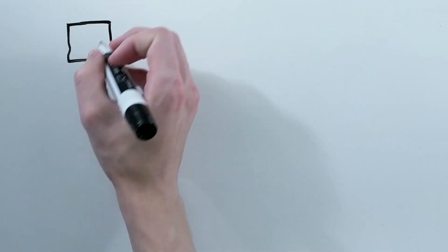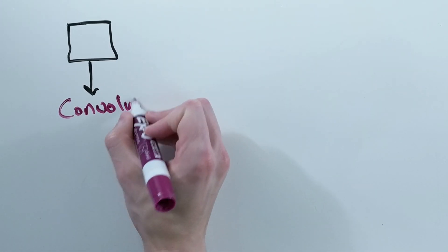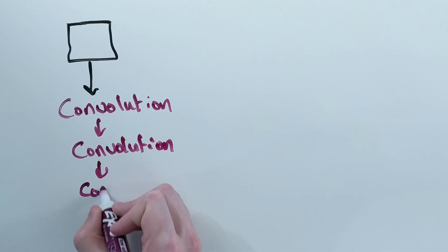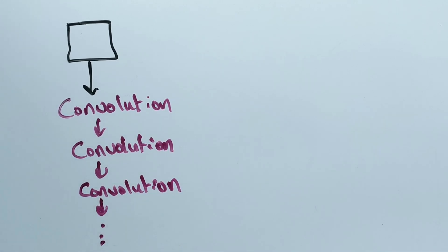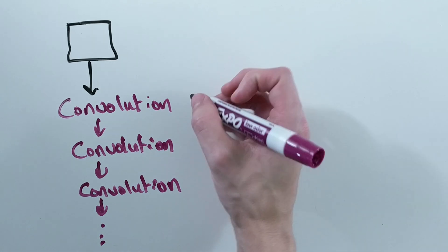To understand larger and larger portions of your input, you stack more and more convolutional layers on top of each other. The idea is that each successive layer builds more general features from the previous layer's features.